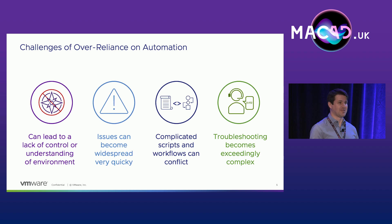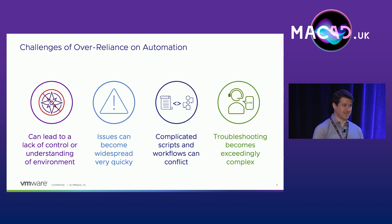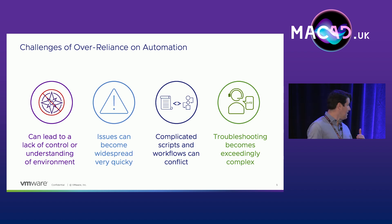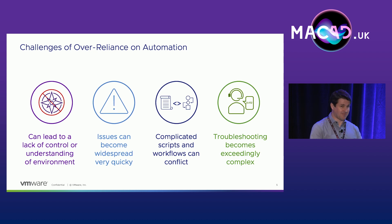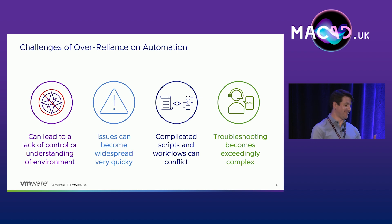You really end up in a spot where tribal knowledge becomes critical — you need those core people around to understand how things work. You can almost paralyze your environment where you have legacy configurations doing really important things, and you don't know the risks of changing them, so you end up not being able to change them. With automation today, you can push out configurations faster and farther-reaching than ever before, but the same is also true of issues — when issues occur, they tend to be very far-reaching.